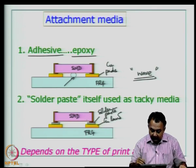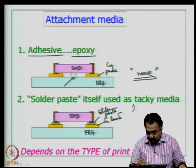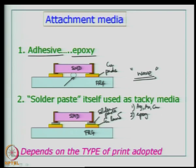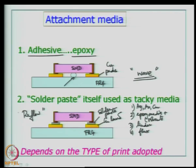A solder paste will typically have metal particles such as silver, gold, or copper; the epoxy media or solvents; the binder or glue; flux material; and so on. For reflow soldering, solder paste is used. Make sure you adopt the attachment media process appropriately — whether you are using a wave soldering process or a reflow soldering process.